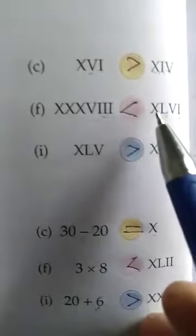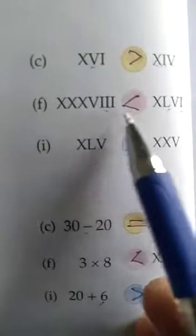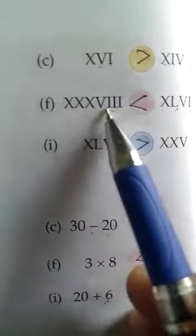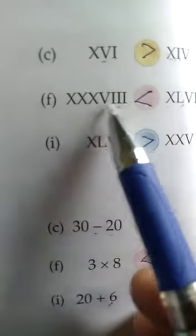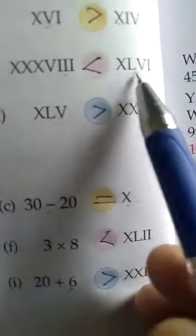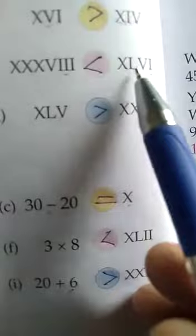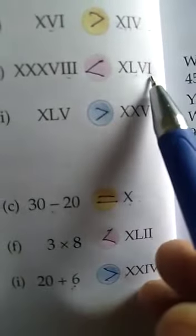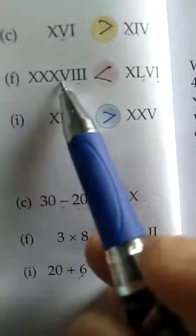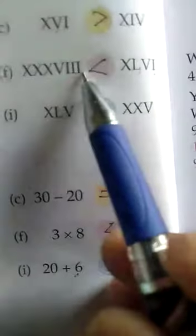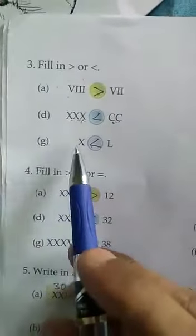Now QF. XXXVII is 30 — this is 38. And XLVI, this is 46. So 46 is greater than 38, so this sign will come here.